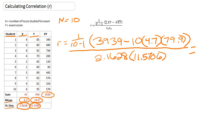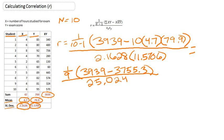So now we can reduce this down. So starting with the top, we have 1 over 10 minus 1, which is 9, within our parentheses leave 3939 the same for now. And we'll multiply out 10 by 4.7 times 79.9. And when we multiply those three numbers together, we get 3755.3. So that would all be within parentheses. And then on the bottom, multiplying 2.1628 by 11.5706, we get 25.0249.